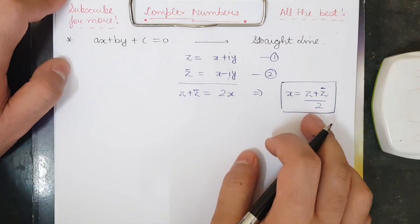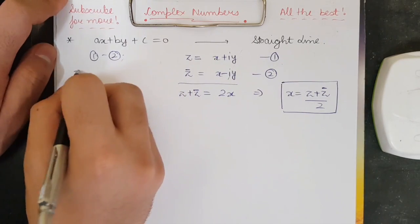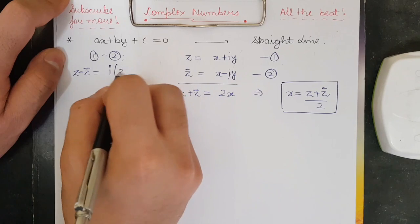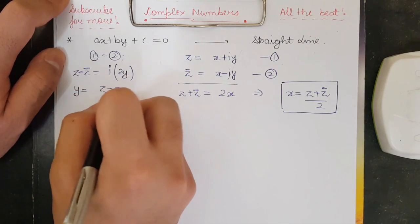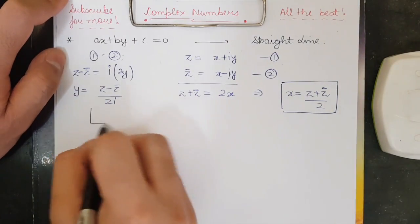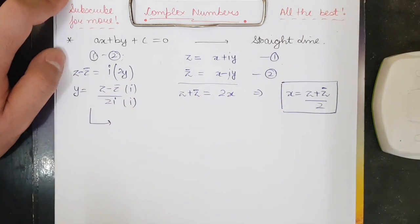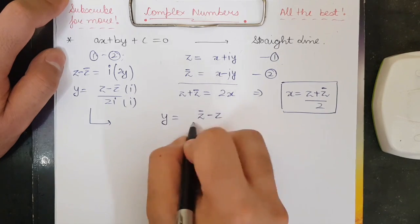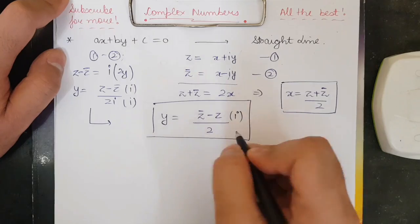Now doing equation (1) minus equation (2): z minus z̄ equals iota times 2y, so y equals (z − z̄) / (2·iota). Multiplying and dividing by iota, since iota² = −1, y equals (z̄ − z) · iota / 2.